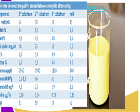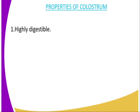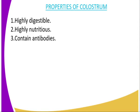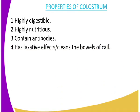Now the properties of colostrum. Number one, it is highly digestible — the colostrum is very highly digestible and therefore a lot of it is absorbed. Then it is highly nutritious; it contains so many nutrients, which include antibodies. Antibodies are the ones which fight disease-causing microorganisms, and therefore colostrum provides immunity to the young one. It also has a laxative effect — in other words, it cleanses the bowels of the calf. And finally, it is highly palatable, meaning it is easily digested and absorbed.